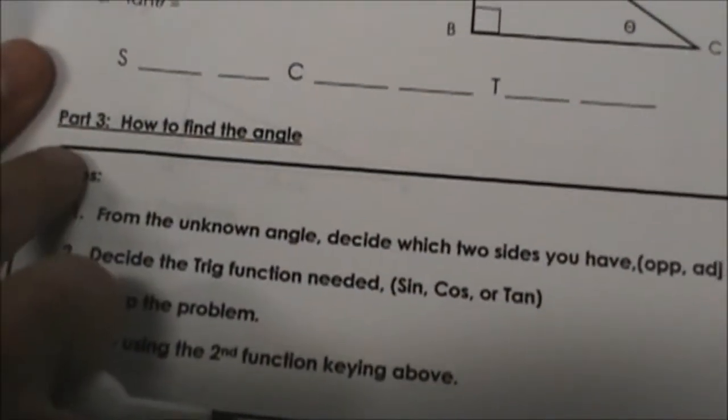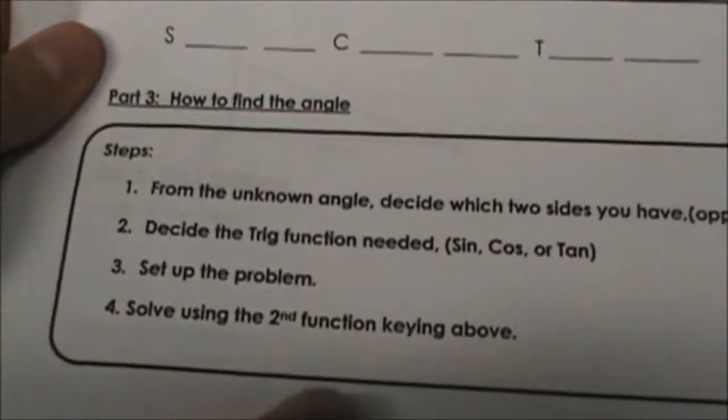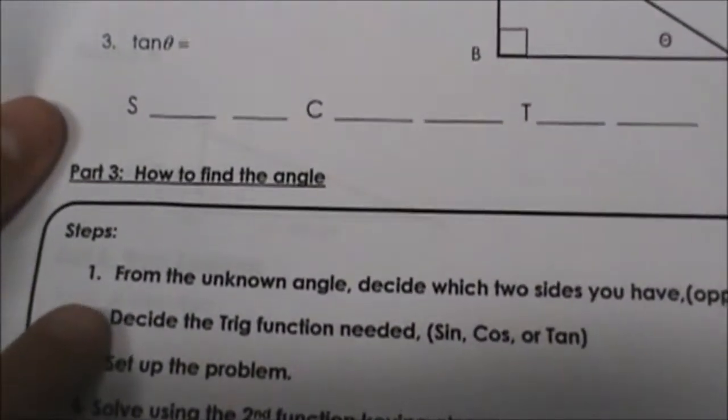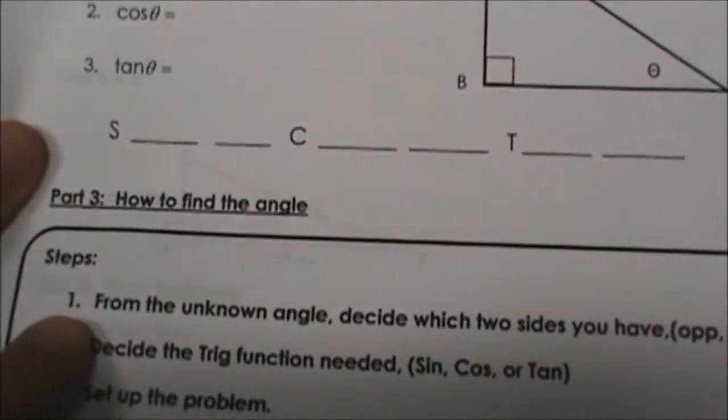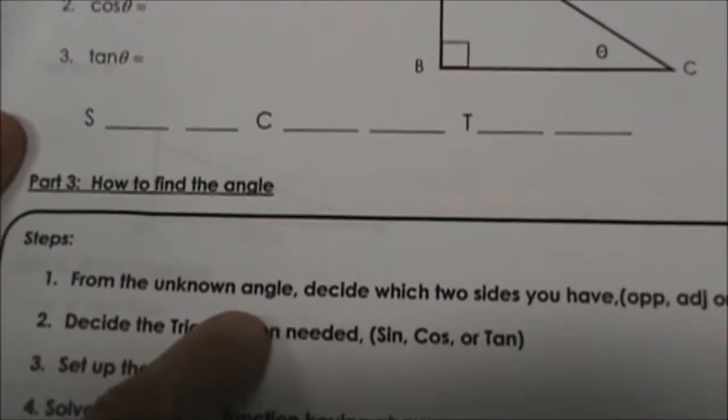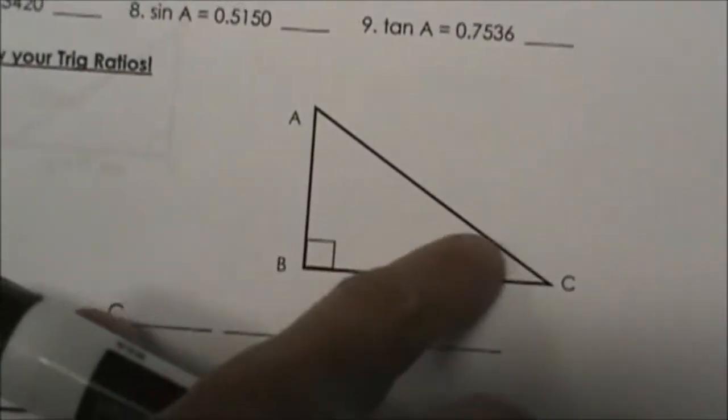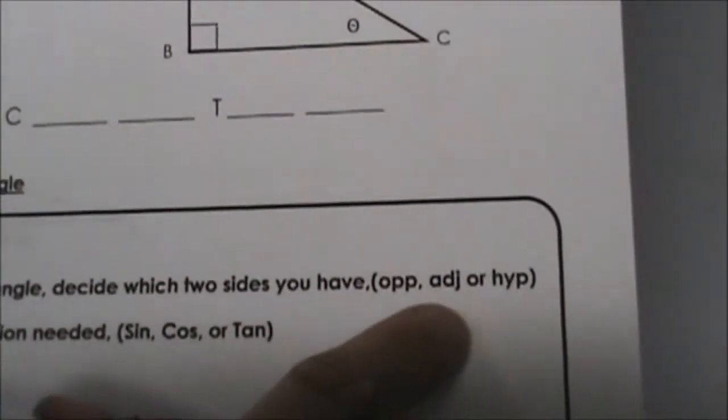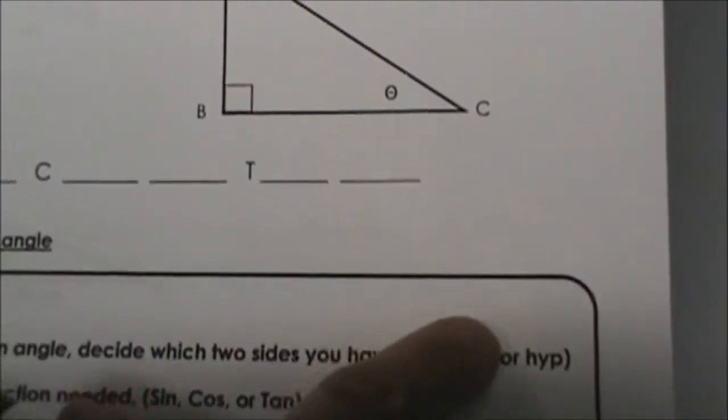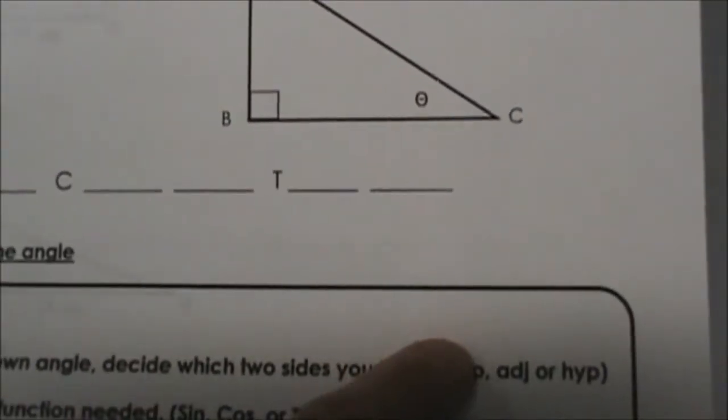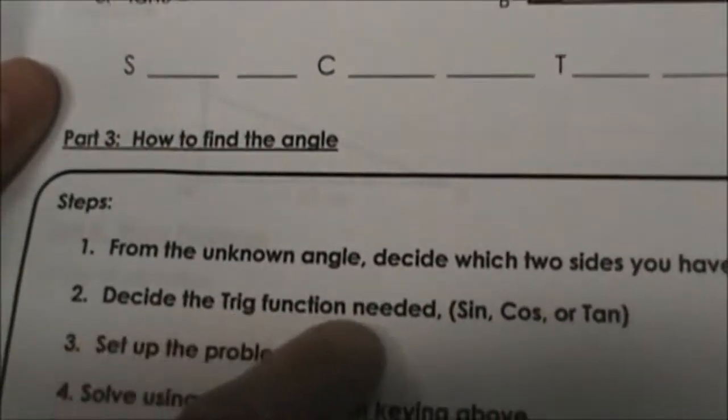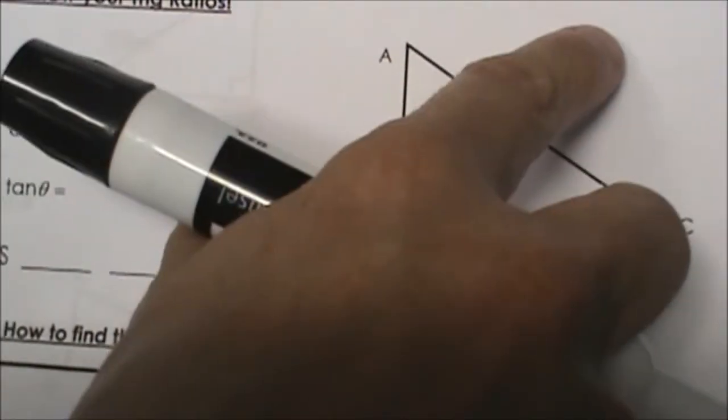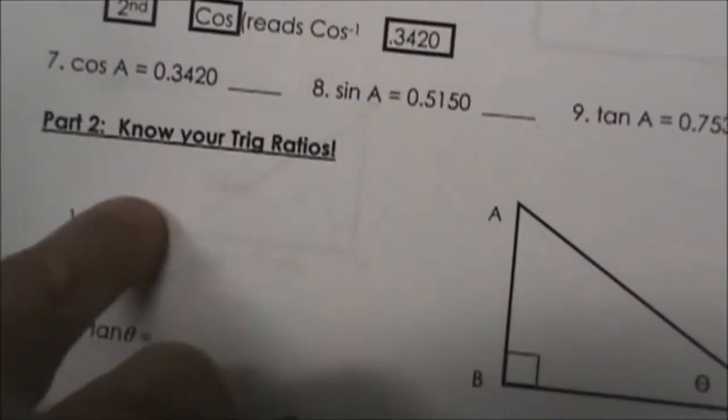Now let's look at part 3: How do you find the angle measures? Here are some steps to follow. First, from the unknown angle, decide which two sides you have - opposite, adjacent, or hypotenuse. That will help us decide which trig function we're going to use. For example, if I have opposite and hypotenuse, I'm going to use the sine function.